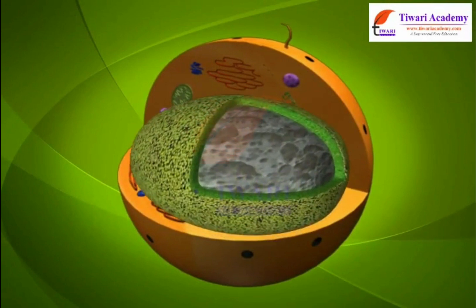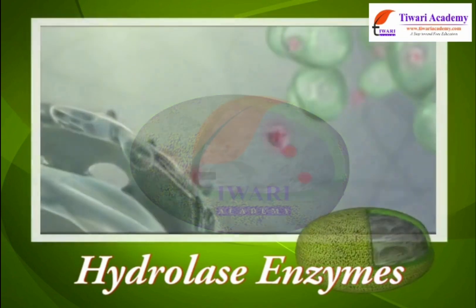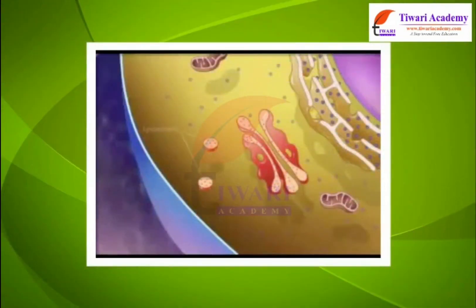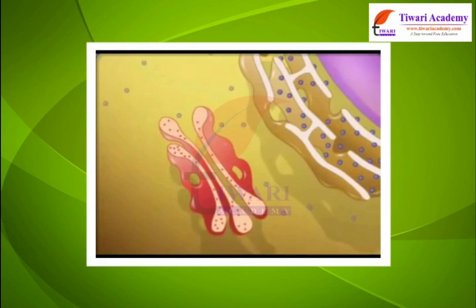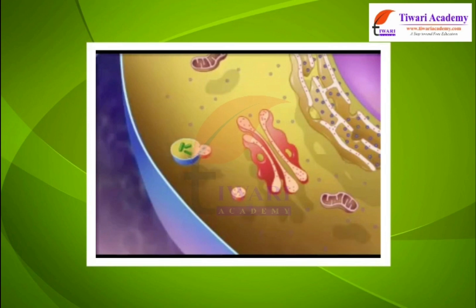Lysosomes are cellular organelles that contain acid hydrolase enzymes that break down waste materials and cellular debris. They are single-membranous sacs containing digestive enzymes known as hydrolytic enzymes. Lysosomes help to keep the cell clean by digesting any foreign material as well as worn-out cell organelles. Foreign materials entering the cell, such as old organelles, end up in the lysosomes, which break them up into small pieces.